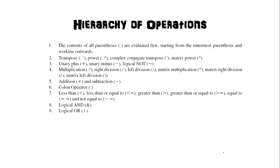Fifth in hierarchy is addition and subtraction — these come after multiplication and division. Sixth is the colon operator (to be covered in upcoming classes). Seventh is the relational operators: less than, equal to, not equal to, etc. Eighth is logical AND. Ninth is logical OR. Logical AND has more priority than logical OR. Level 1 has the highest preference and level 9 has the lowest.